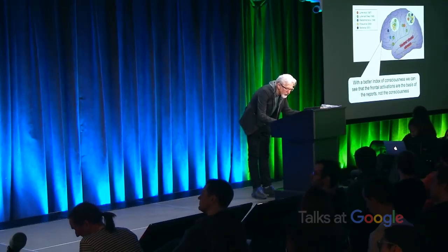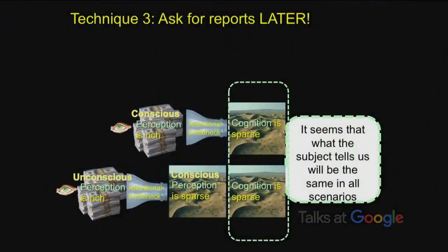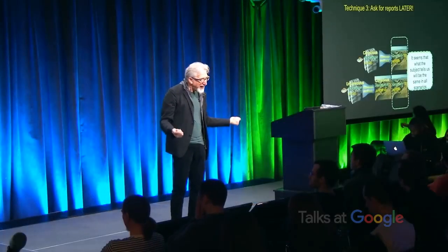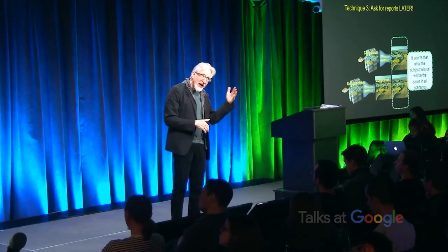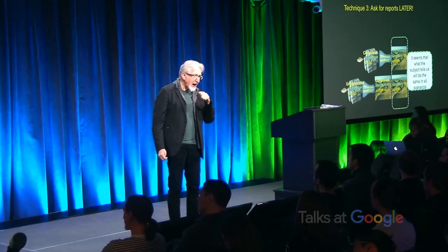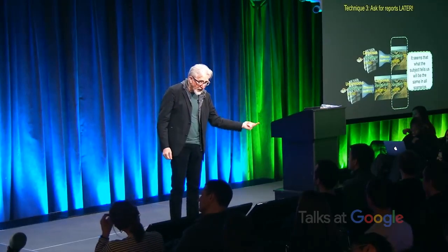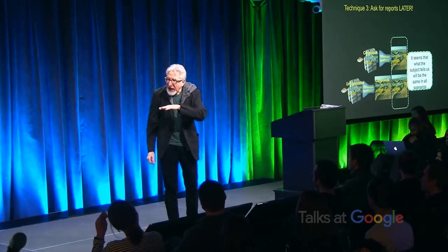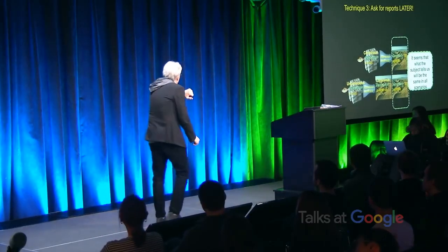This longer talk involves three different techniques for avoiding the problem of how to distinguish phenomenal from access consciousness when both views end up with sparse cognition. The one I just showed you is called no-report, where reports come before the experiment. The one I'm going to show you now has reports come after the experiment.